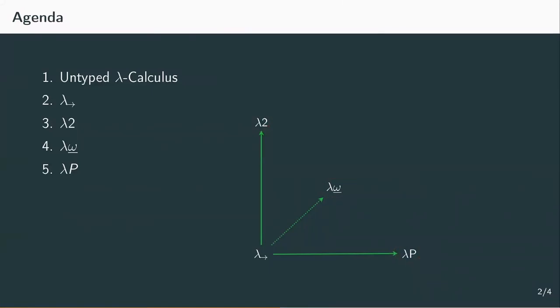These three extensions can be visualized as the axes in three-dimensional space starting from the simply-typed lambda calculus. The features of these systems can then be combined to get four more type systems. This gives the shape of a three-dimensional cube, hence the name the lambda cube.